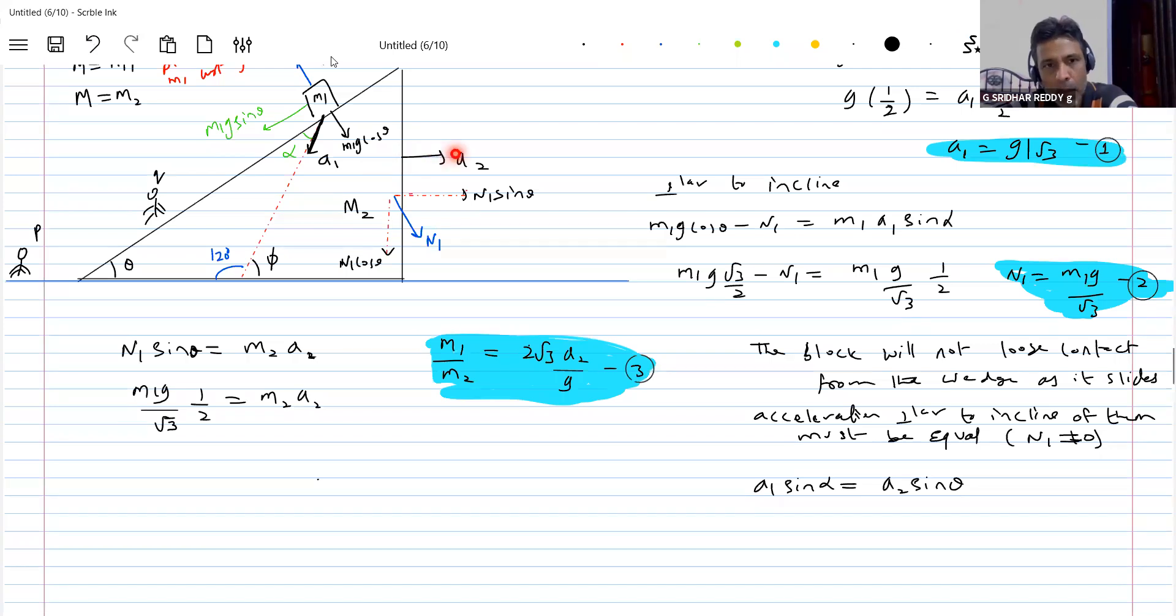Acceleration of the wedge A2. Perpendicular to incline, how much it should be? This will be theta. If you resolve it, what can be this angle? Theta. So what is the perpendicular thing? This should be A2 sine theta. Got this.